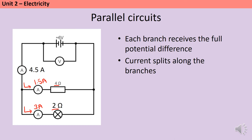We can do the maths for each branch and see that V still equals IR. For the upper branch, 1.5 times 4 still gives 6 volts — the full potential difference — and for the lower branch, 3 times 2 also equals 6 volts.